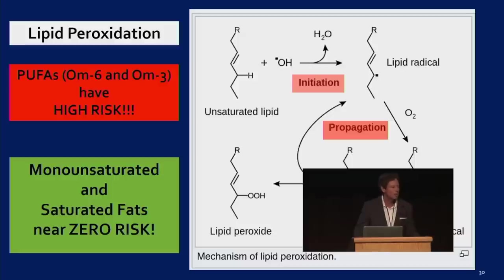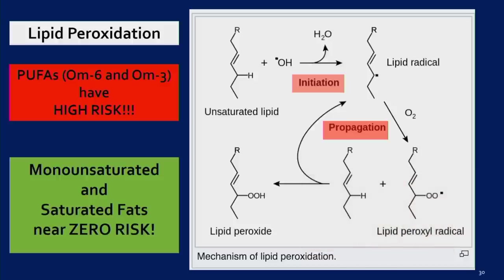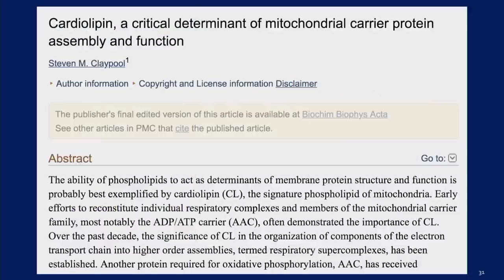As one lipid researcher put it: to oxidize monounsaturated and saturated fats, you'd have to throw them in gasoline and light them on fire — that's what it takes. In the lipid peroxidation model, an unsaturated lipid reacts with a hydroxyl radical, creating a lipid radical that reacts with oxygen to produce a lipid peroxyl radical. That reacts with another unsaturated lipid right next to it, creating propagation. This circular reaction takes one millisecond — 1,000 molecules per second can be peroxidized. This is very damaging.